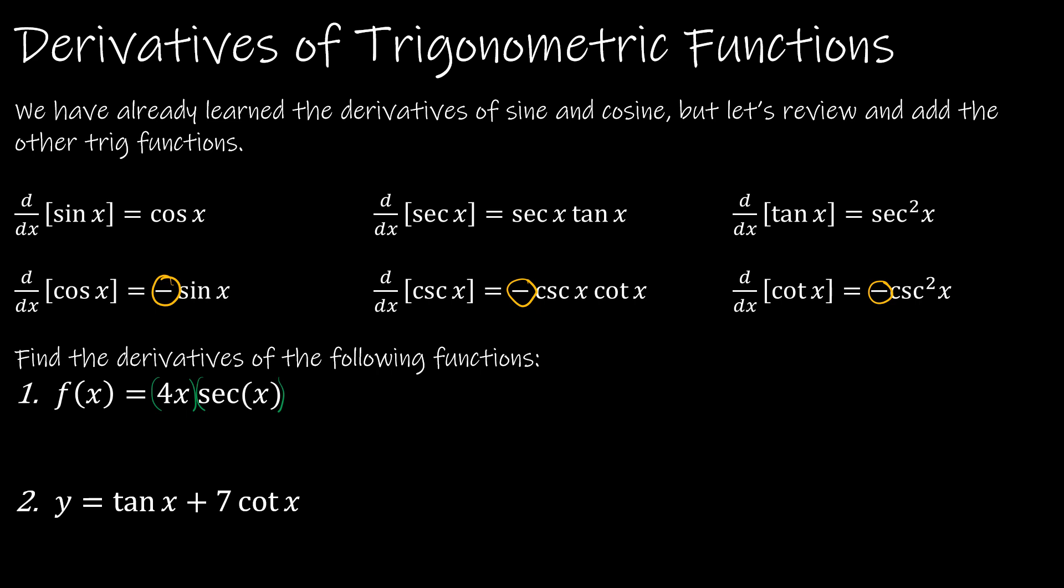So to find the derivative, f prime of x, I'm going to need to do some work. So the product rule said take the first function times the derivative of the second function. So it's the derivative of secant of x, it's secant of x tangent of x. And then add to that the second function, secant of x, times the derivative of the first function. So what's the derivative of 4x? It's 4.